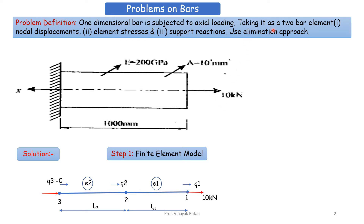We're taking it as a two-bar element, as mentioned in the question. We could solve this by assuming one, two, three, or more bar elements — if you increase the number of elements, the only difference is that your stiffness matrix will be larger.